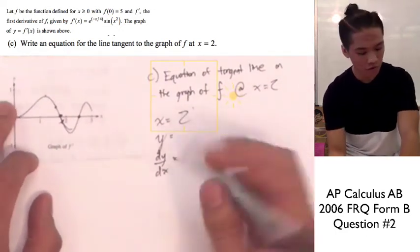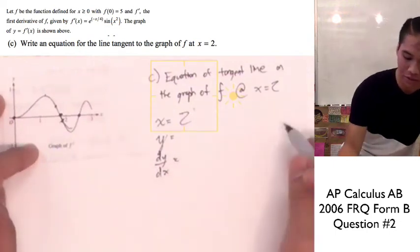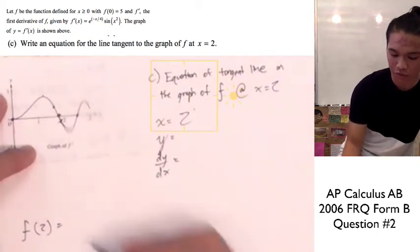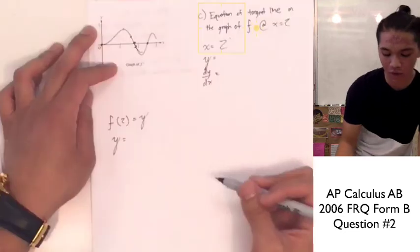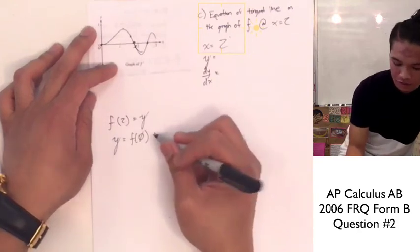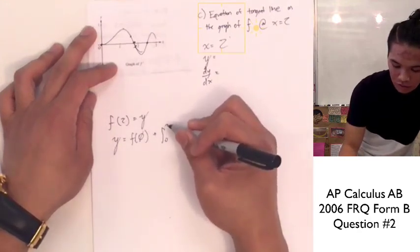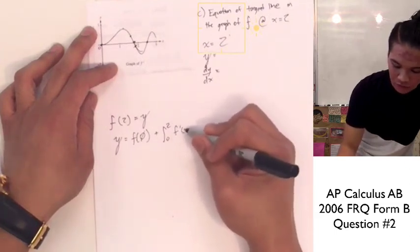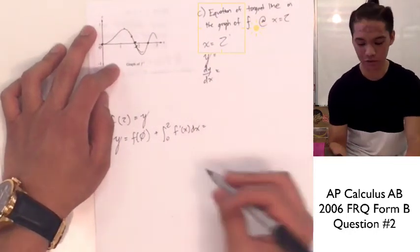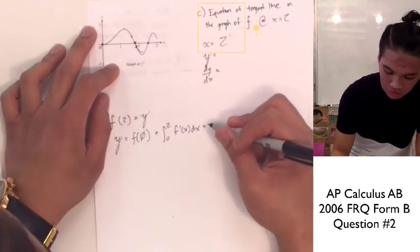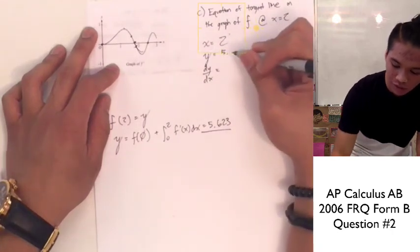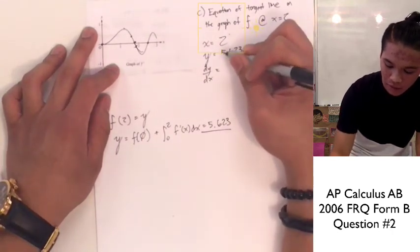Our value of y is found by plugging 2 into our f function: f(2) = y. Just like we did in the last part, y = f(0) plus the integral from 0 to 2 of f'(x) dx. Using our calculator, this value is 5.623. So we have our value of y: 5.623.